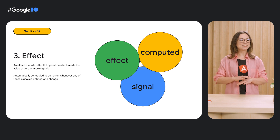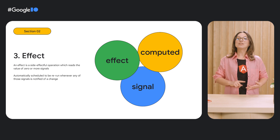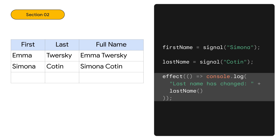Effects have a variety of use cases, including triggering network requests, performing rendering actions, reading or mutating the DOM after Angular is finished rendering. In our spreadsheet, we want to log to the console when last name has changed. We can do that inside an effect.